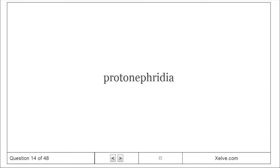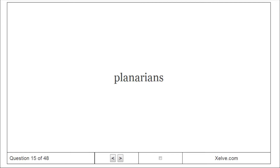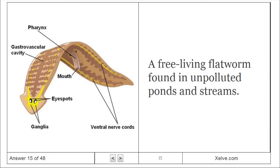Protonephridia. An excretory system, such as the flame bulb system of flatworms, consisting of a network of tubules lacking internal openings. Planarians. A free-living flatworm found in unpolluted ponds and streams.